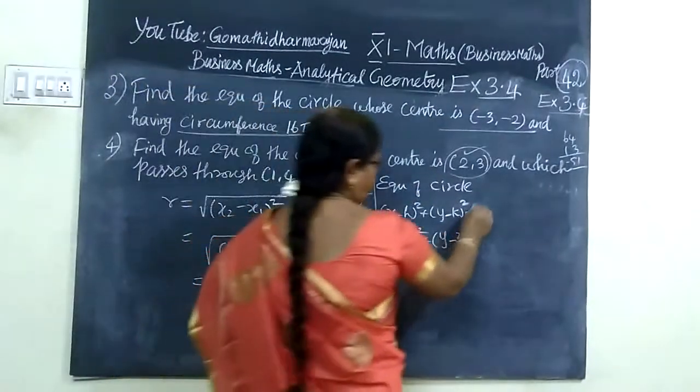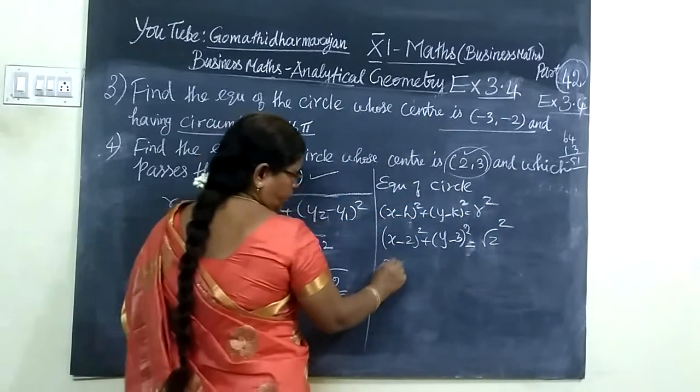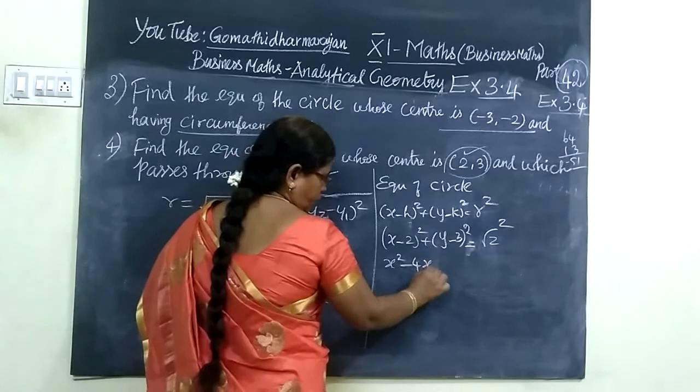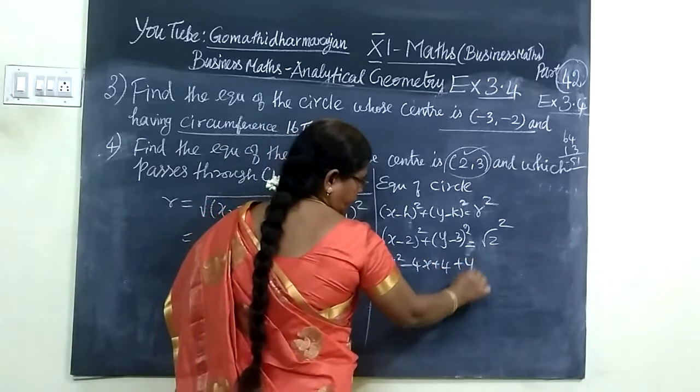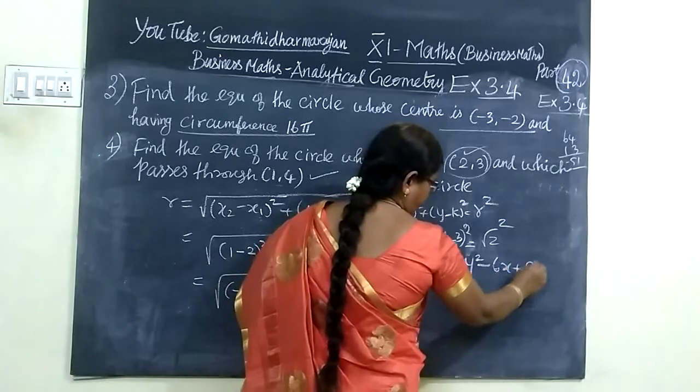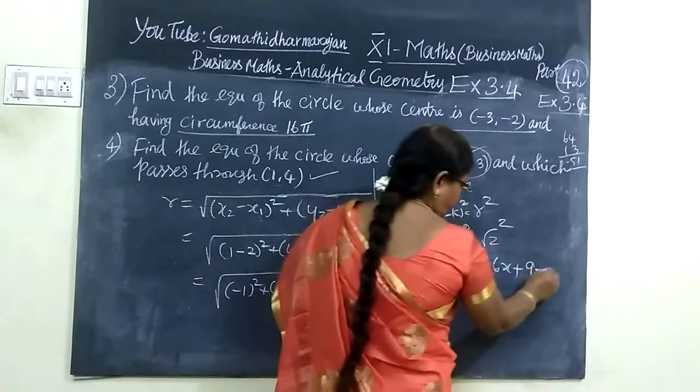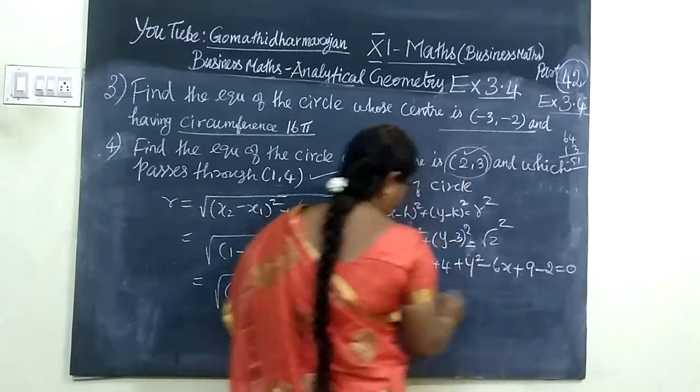Expanding: (x - 2)² + (y - 3)² = 2. Using the formula (a - b)² = a² - 2ab + b². So x² - 4x + 4 + y² - 6y + 9 = 2, bringing 2 to the left equals 0.